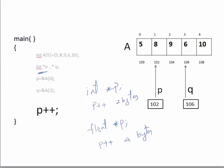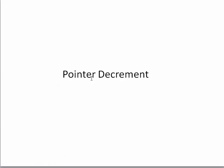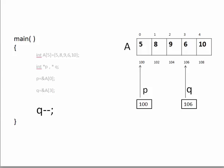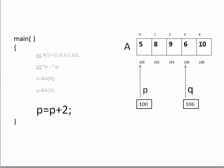The next operation is pointer decrement. If I say Q--, this pointer Q will move from address 106 to 104, decrementing by two bytes. So Q-- means move to the previous element — it moves Q onto the previous integer.